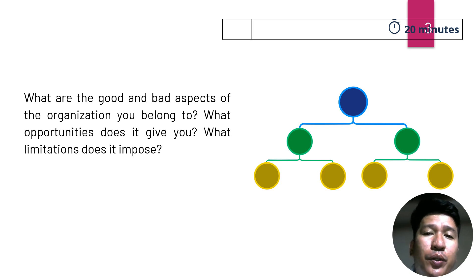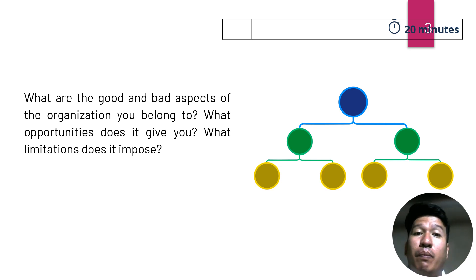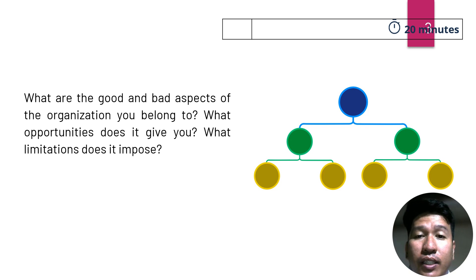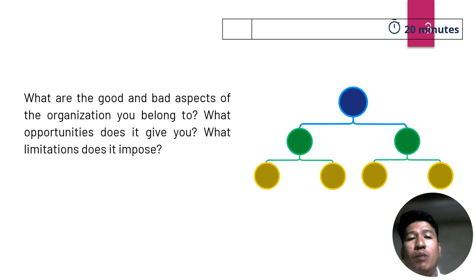We will also identify the opportunities it gives you and the limitations it imposes upon you. Key questions include: How does an organization affect its members? How can you relate this to the different forms of societies and how it affects the lives of people living within them? Why do we need to improve the system in a social organization, and what is the role of members in improving the condition of the organization they belong to?